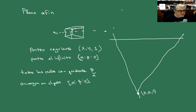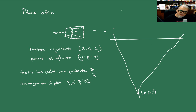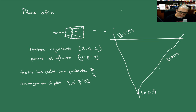El punto (α, β, 0) no es exactamente un punto, sino una clase de pendientes. Toda esta recta es la recta al infinito. Tenemos la clase de pendientes que va a corresponder con (0,1,0), que son las que tienen pendiente infinito, y (1,0,0), que tienen pendiente 0.